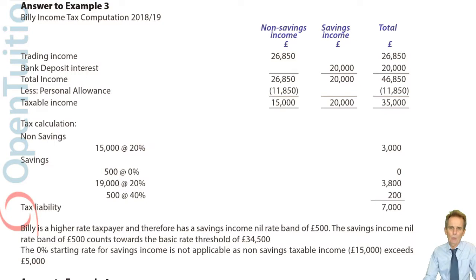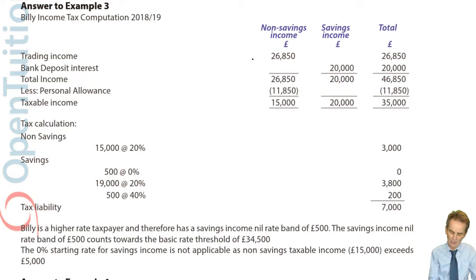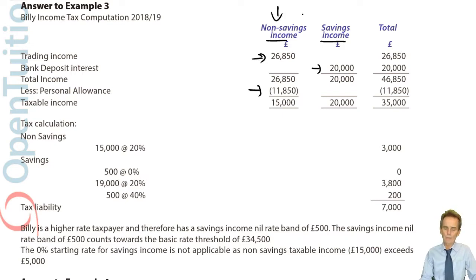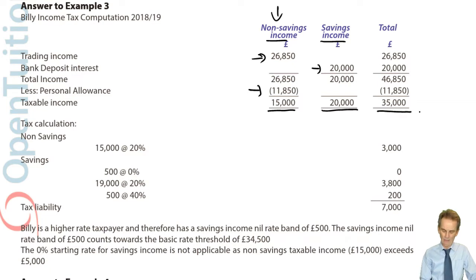We can pick up all the figures nicely from the question. We have trading income assessment of £26,850 and bank deposit interest of £20,000 — non-savings and savings respectively. The personal allowance is allocated firstly against non-savings income, which is more than sufficient to absorb it all, leaving taxable income of £15,000 non-savings and £20,000 savings, a total of £35,000.